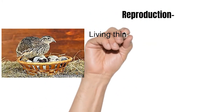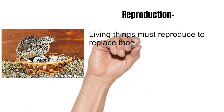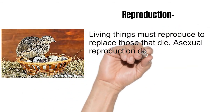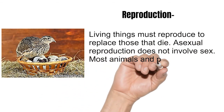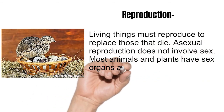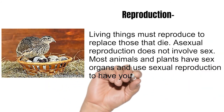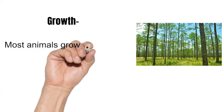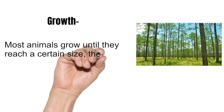Reproduction: living things must reproduce to replace those that die. Asexual reproduction does not involve sex. Most animals and plants have sex organs and use sexual reproduction to have young.